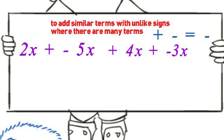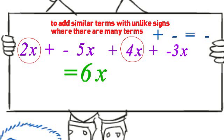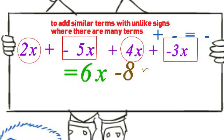First, add all the plus terms. We have 2x and 4x. We add them to get 6x. Next, add all the minus terms. We have negative 5x and negative 3x. We know how to go about this. This gives us negative 8x.